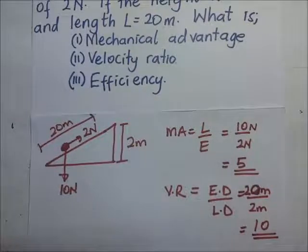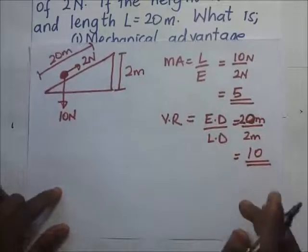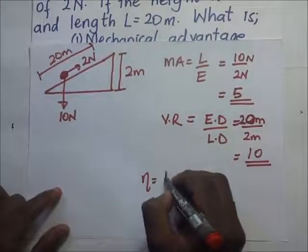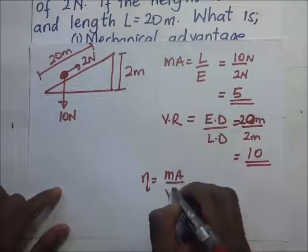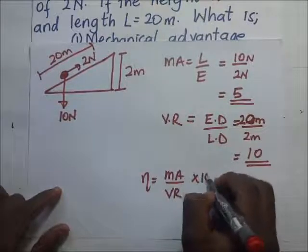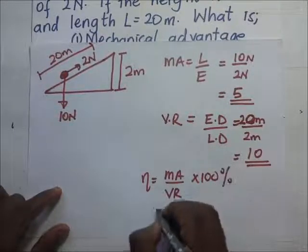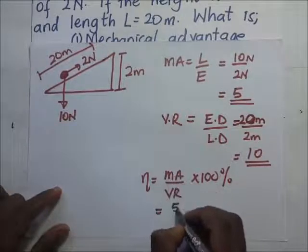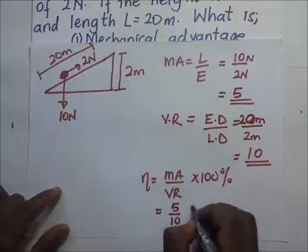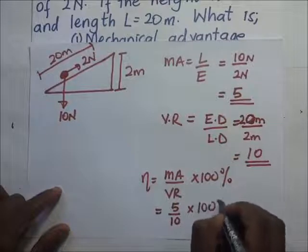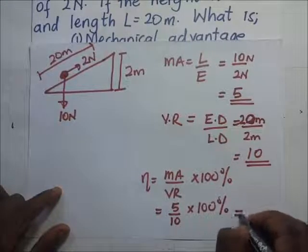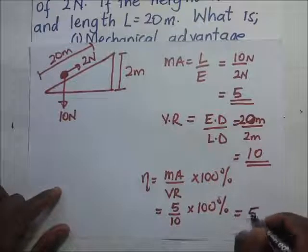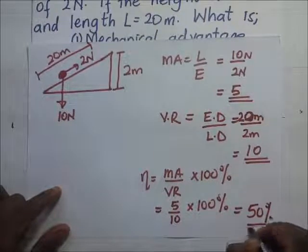Now the efficiency. To find the efficiency: efficiency equals mechanical advantage over velocity ratio times 100 percent. The mechanical advantage is 5, divided by the velocity ratio of 10, times 100 percent. The efficiency is therefore 50 percent.